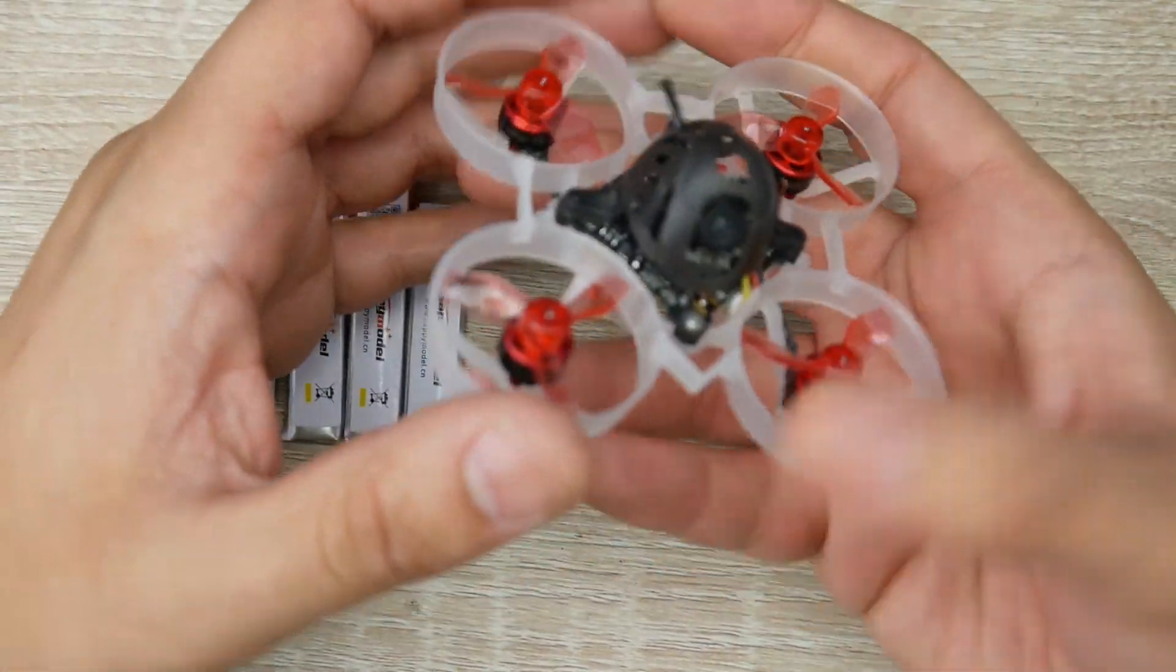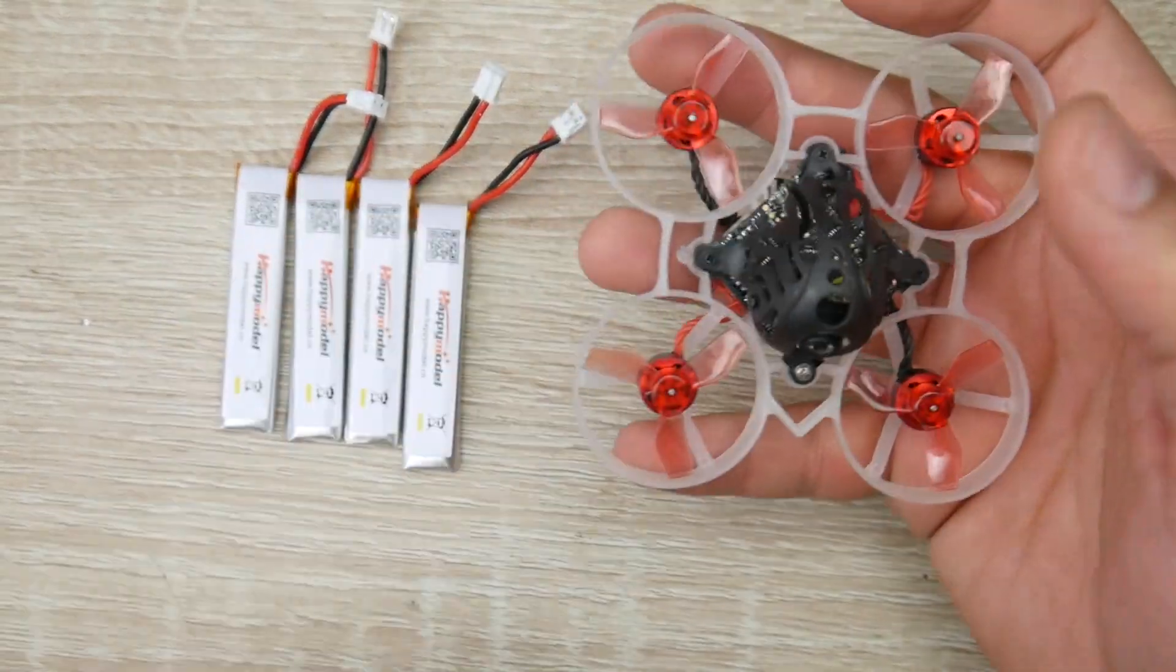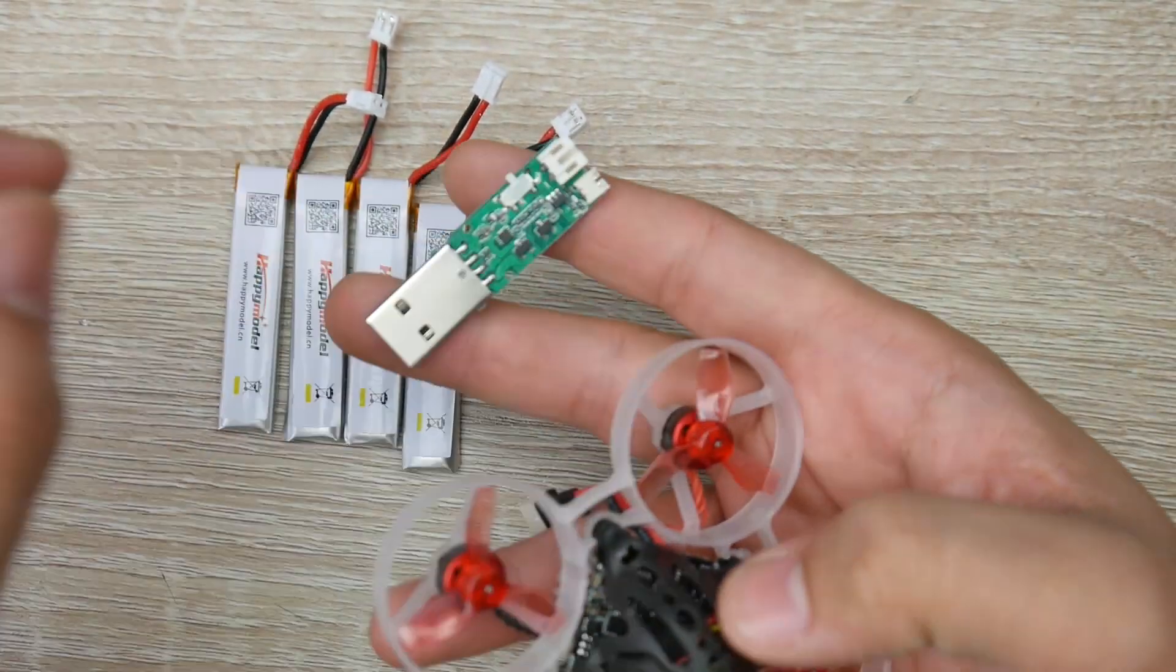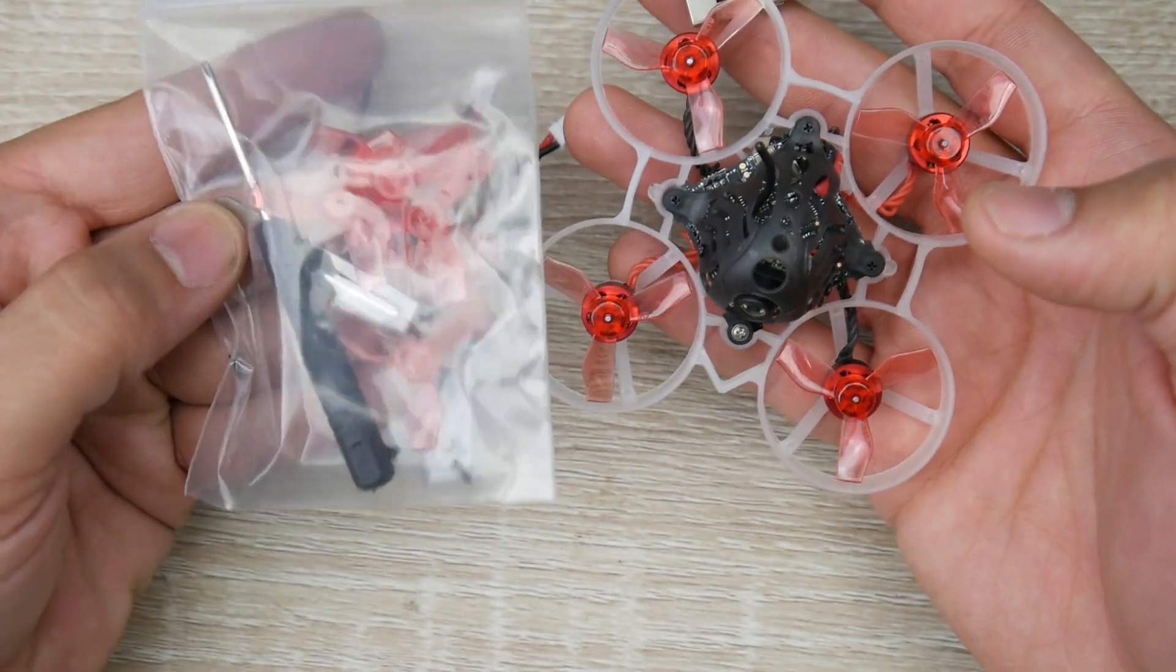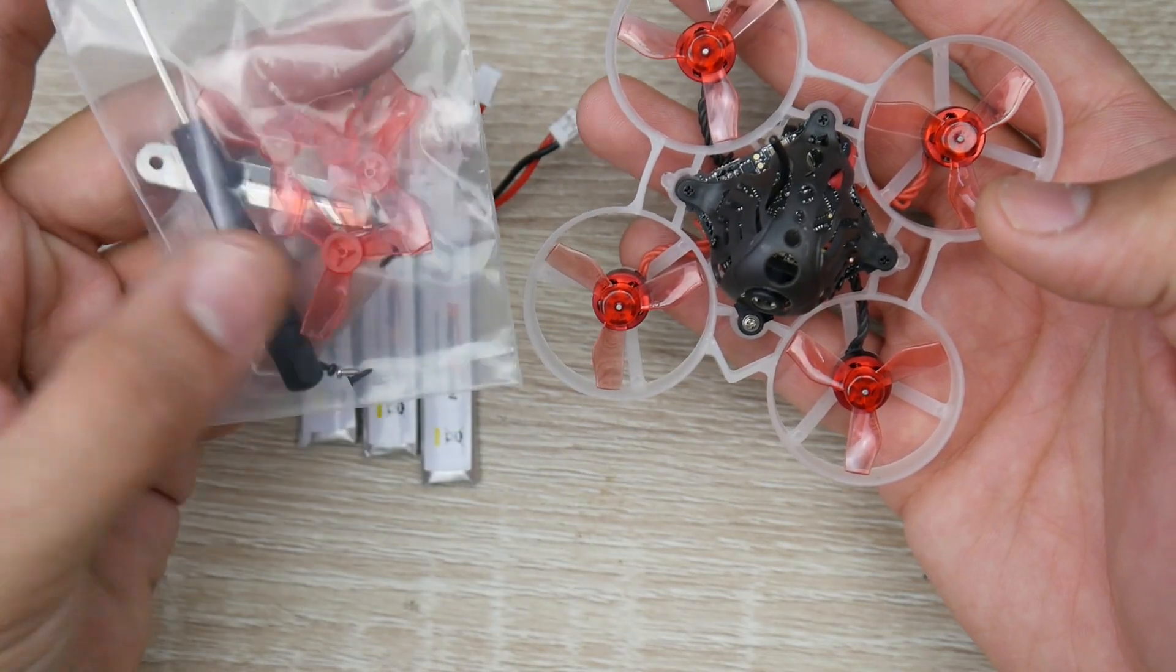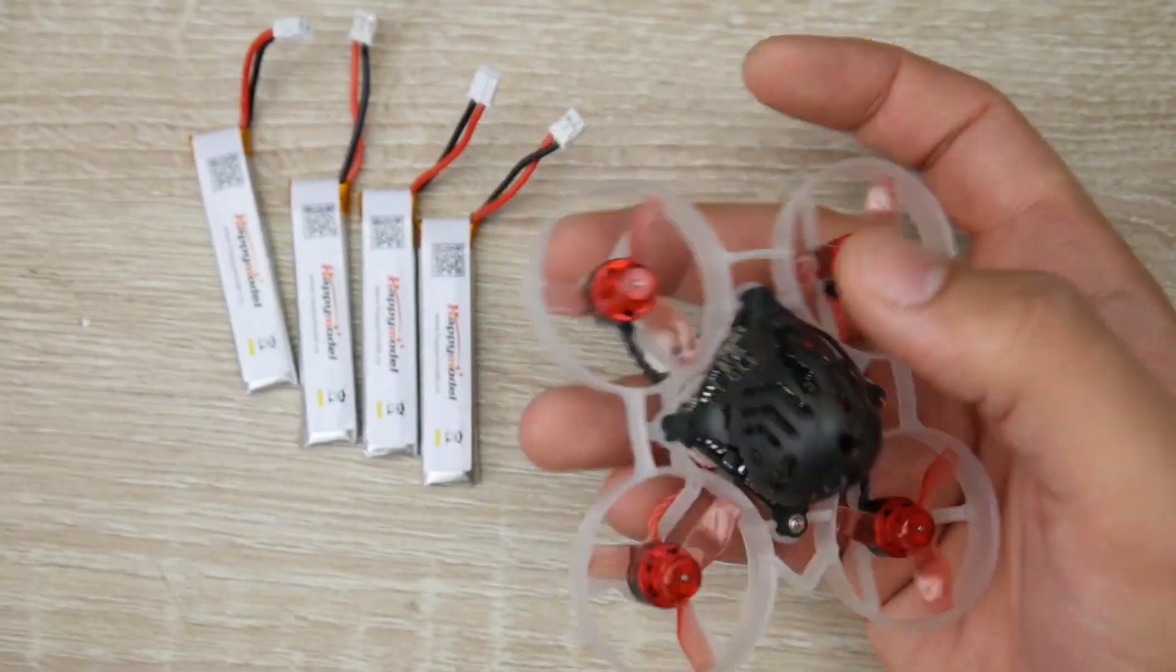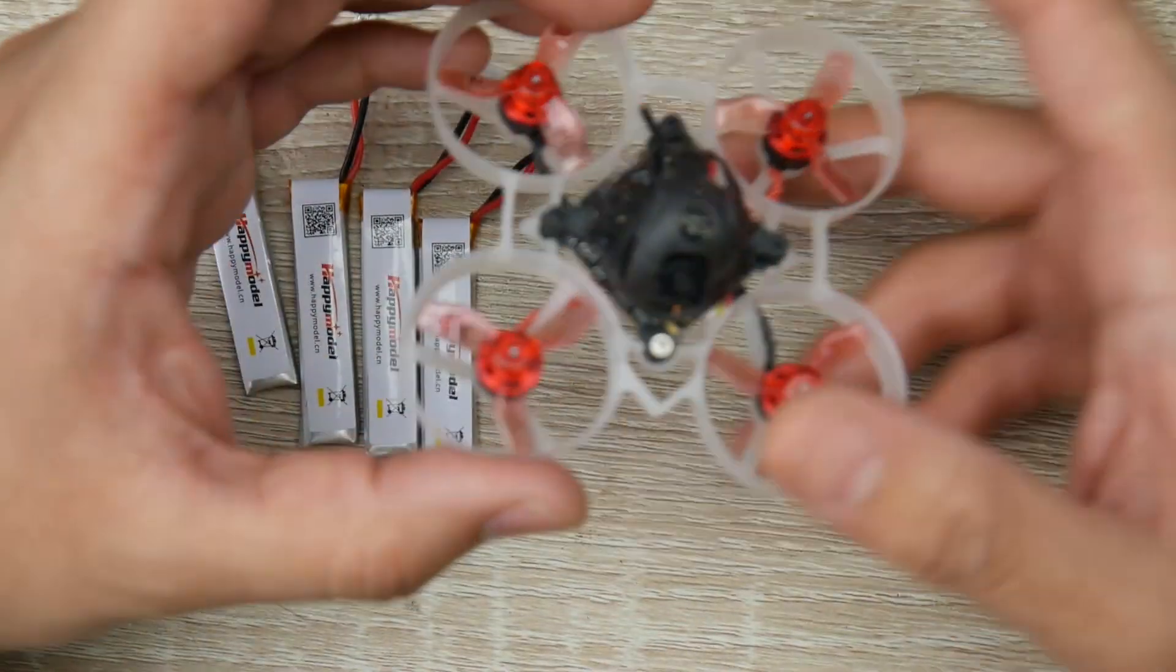Obviously you get the complete drone with everything built in. We get a small USB charger and four batteries, an extra set of propellers, a propeller remover, and also some extra screws and a screwdriver here. That's really great to see—you're getting quite a lot for 86 bucks.